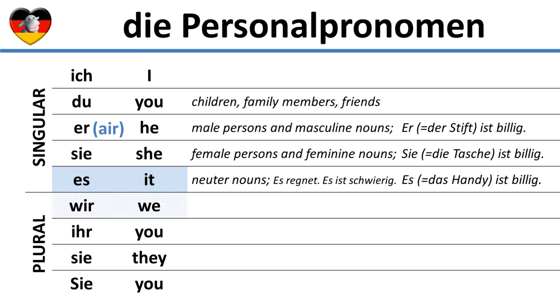Let's get to the plural. Wir means we in English. Note that the pronunciation of this word is close to the pronunciation of the word weir — wir. The r at the end is not pronounced.